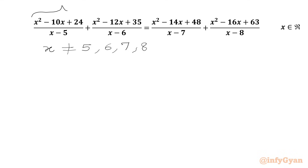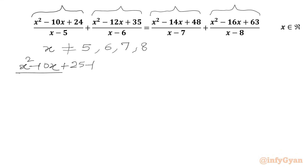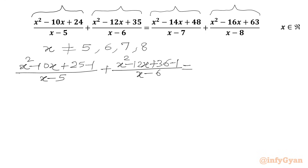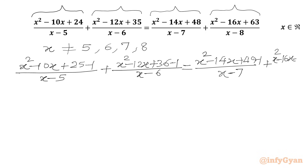Now we will write our numerators. x² - 10x + 24 can be written as 25 - 1 over (x - 5), plus x² - 12x + 35 is 36 - 1 over (x - 6), equal to x² - 14x + 48 which is 49 - 1 over (x - 7), plus x² - 16x + 63 which is 64 - 1 over (x - 8).